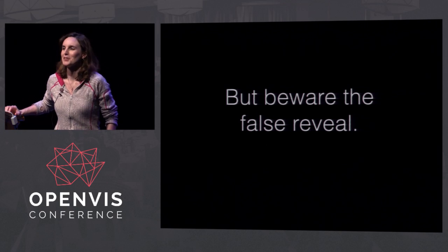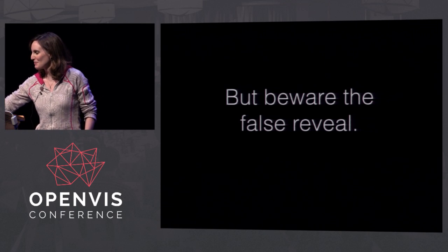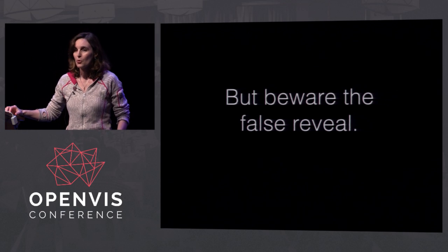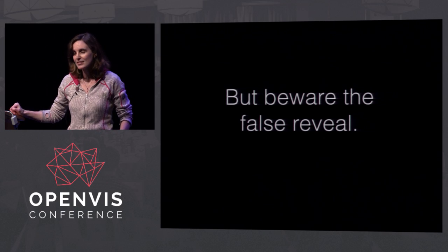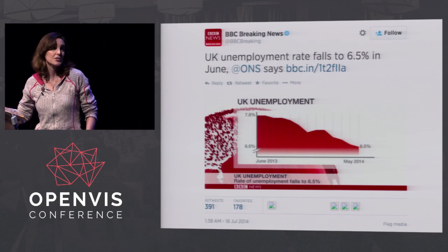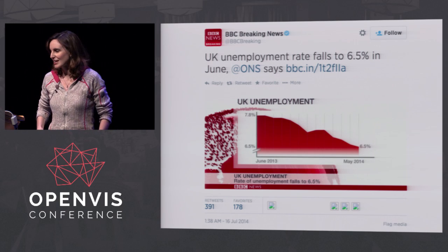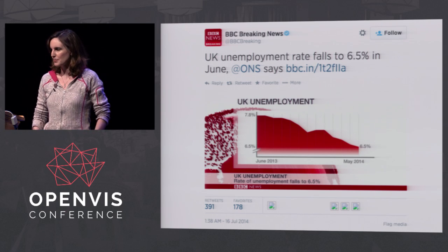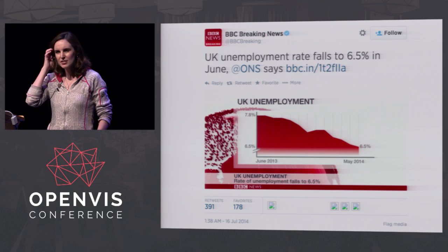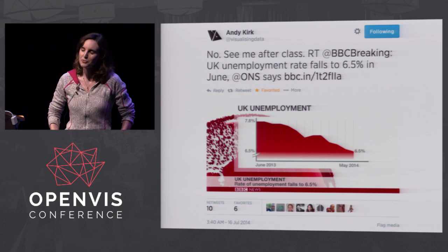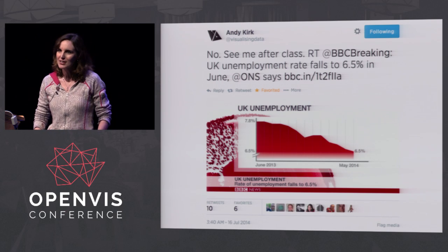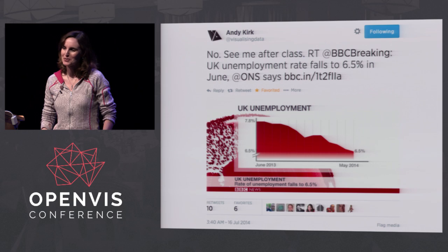Always beware the false reveal. In my field things move incredibly quickly — we do projects within hours, sometimes over weeks or months. We need to be incredibly careful. There's something just slightly off about the slope of a BBC line going from unemployment 7.8 down to 6.5 — that just doesn't quite sit right, and you can see they've got a little bit of a broken axis. Fortunately, this community has a good number of people always on guard for this kind of false reveal, and we're pretty good at quickly peer reviewing each other.